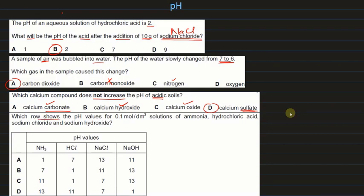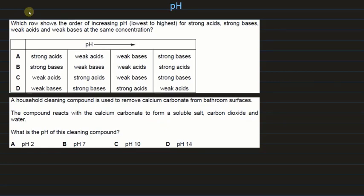Which row shows the pH values of 0.1 mol per dm³ solutions of ammonia, hydrochloric acid, sodium chloride, and sodium hydroxide? Sodium chloride is neutral at pH 7. Sodium hydroxide is a strong base at pH 13. The correct answer is C. For increasing pH order — lowest to highest — strong acid, weak acid, weak base, strong base: A is the correct answer.